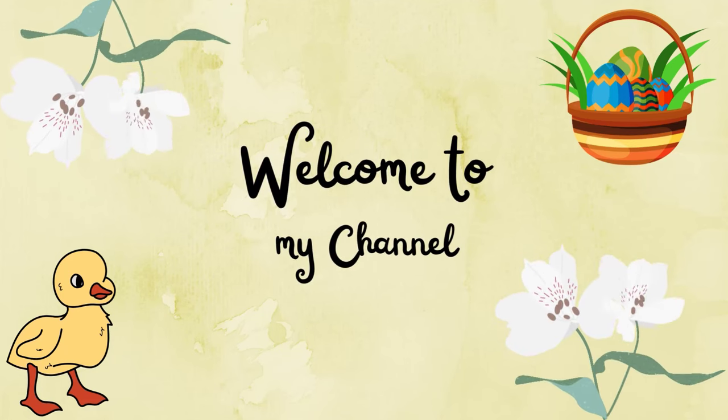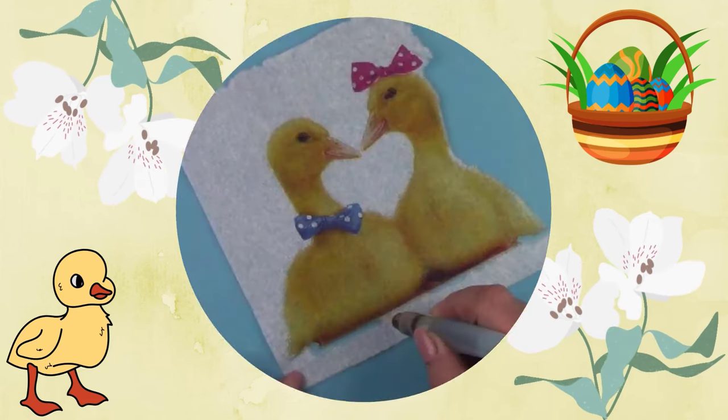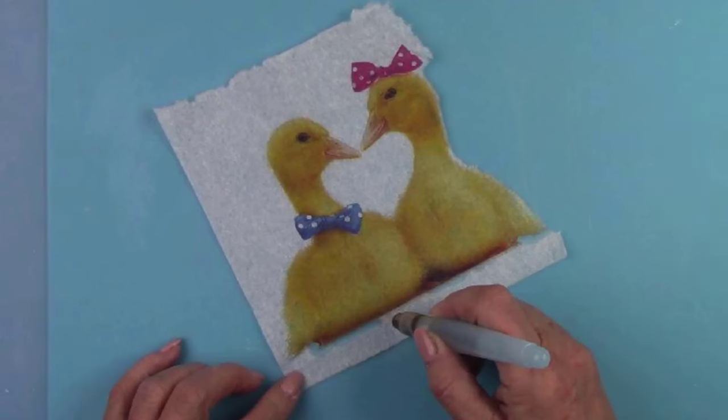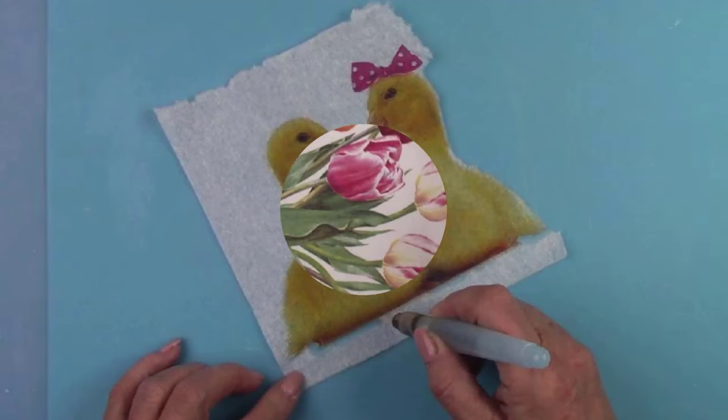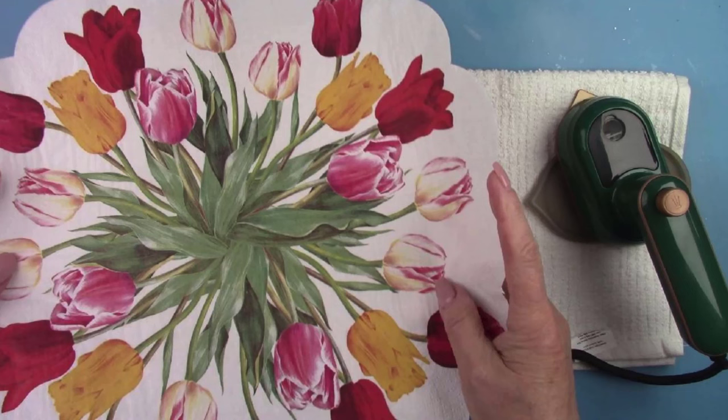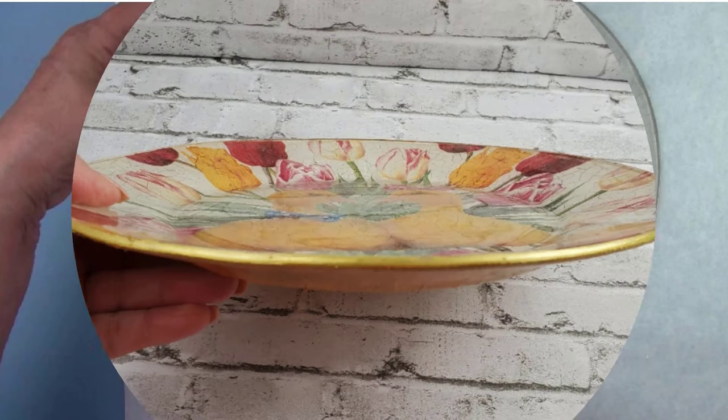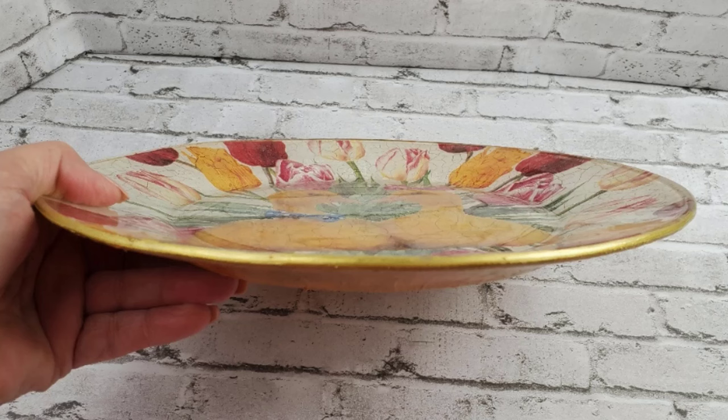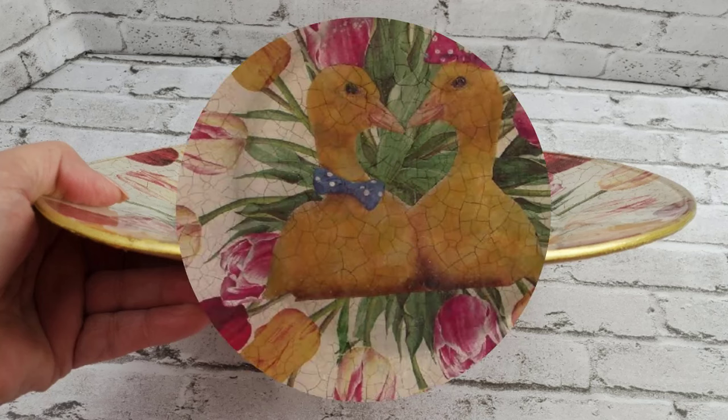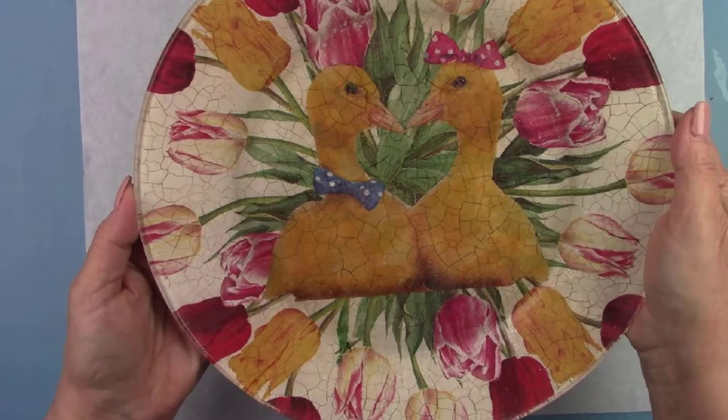Hi there all my crafty friends. I'm Donna from Mason Creations Etc and welcome to my channel. We're going to do plate number two in my reverse decoupage on a glass plate series. This one is going to be so cute. It's going to have a tulip background and two of the cutest little Easter ducks. So if you are ready, let's make a mess.